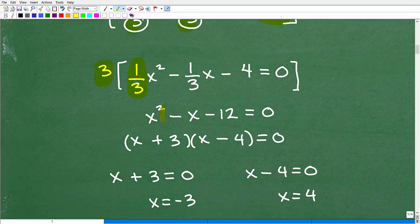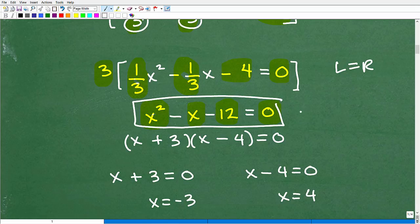So if I multiply this entire equation by three, these fractions go away. They become one. And then obviously this is going to change. And let's take a look at that now. All right. So let's get rid of the fractions. I'm going to multiply it by the LCD. So three times this is going to be x squared. Three times one third is just one x squared. Three times this negative one third is negative x. And then three times this negative four is negative 12. And then three times zero is zero. So remember in algebra, I can do anything I want to an equation as long as I do it equally to both the left and right hand side.